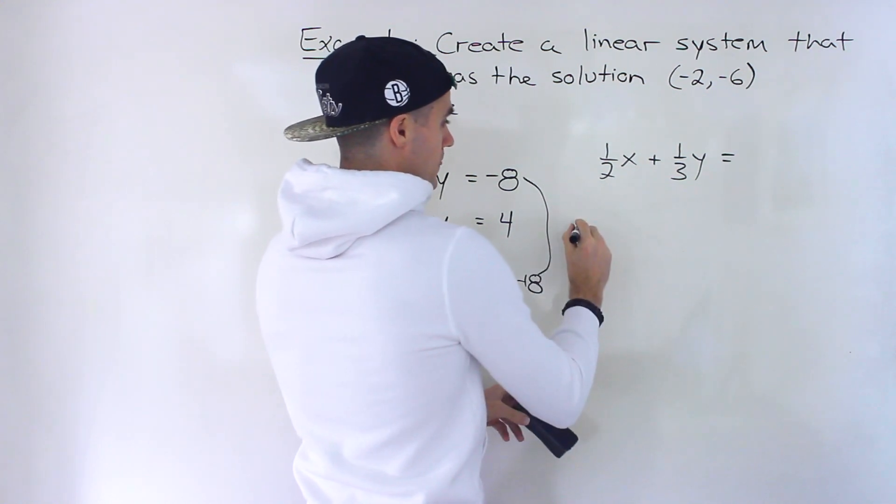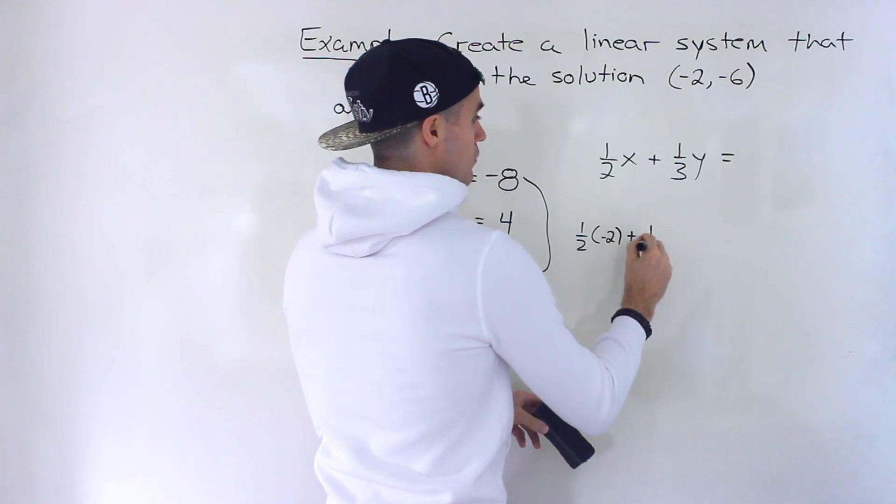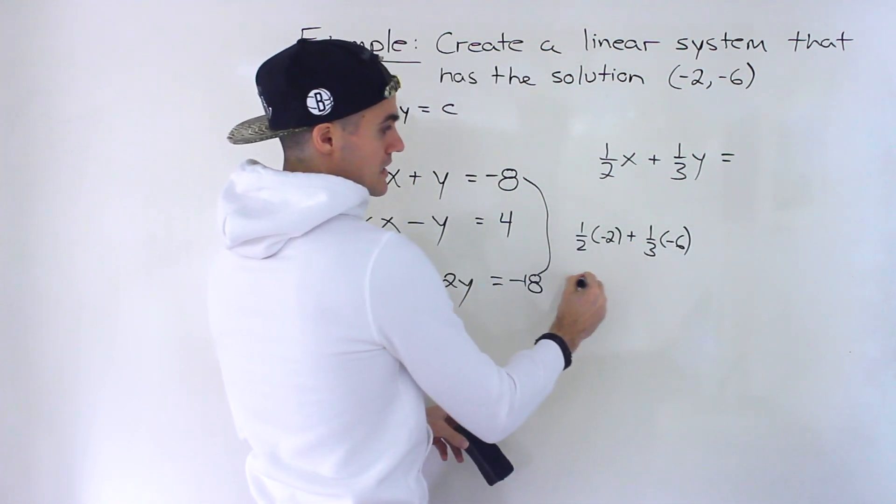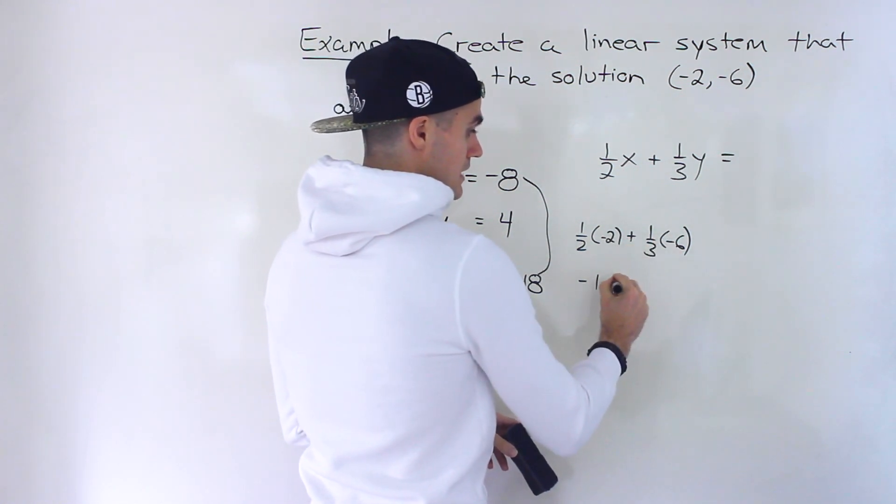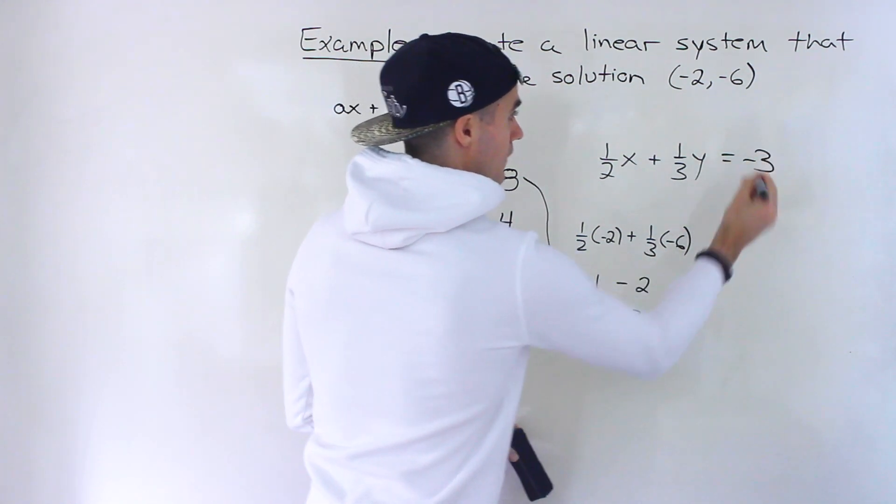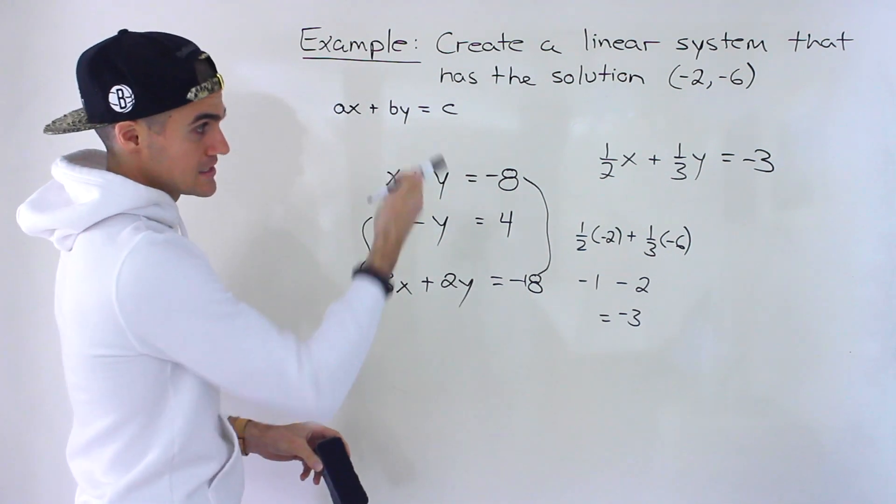What's the integer going to be? Well, it's going to be 1 over 2 times negative 2 plus 1 over 3 times negative 6. 1 over 2 times negative 2 is negative 1. 1 over 3 times negative 6 gives us negative 2. So plus negative 2, which is like minus 2, which gives us negative 3. So that's another line that you can use that contains that point.